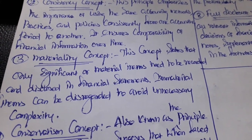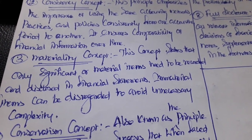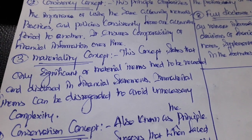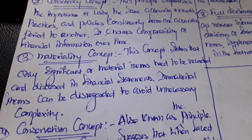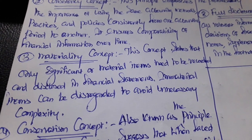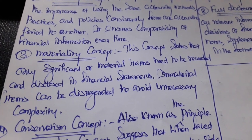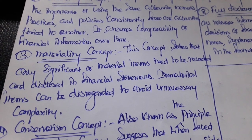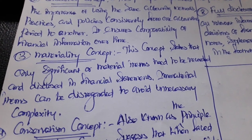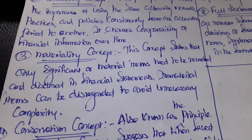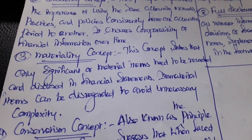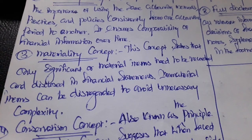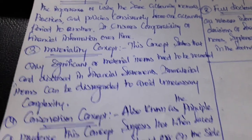The materiality concept states that only significant or material items need to be recorded and disclosed in financial statements. Immaterial items can be disregarded to avoid unnecessary complexity. Only material items need to be recorded and disclosed in financial statements; immaterial items can be omitted.